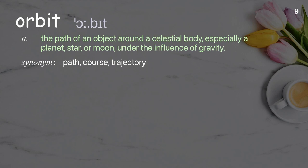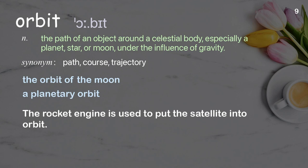Orbit: The path of an object around a celestial body, especially a planet, star, or moon, under the influence of gravity. Examples: The orbit of the moon, A planetary orbit. The rocket engine is used to put the satellite into orbit.